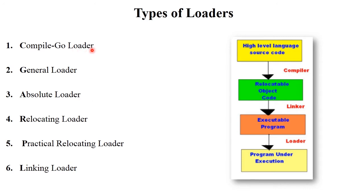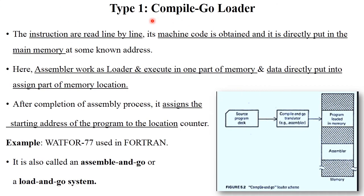The first type of loader is the compile and go loader. This is a basic loader generally used in the 1970s, for example in the Fortran language — a language developed before C or C++. In this structure, a high-level language source code is compiled into object code, linked into an executable program, and loaded into memory for execution, all performed in a minimum amount of time.